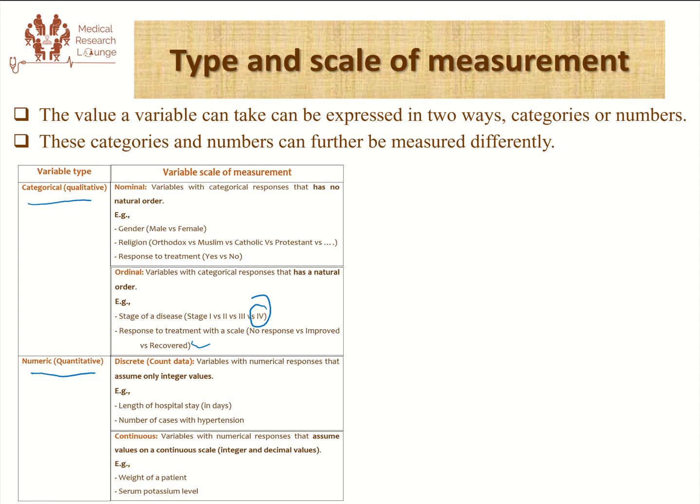The other is when numerical values assume values on a continuous scale — meaning they can have both integer and decimal values. We call them continuous variables. Good examples are weight, the height of a patient, BMI, and many other laboratory values. They assume values which are on a continuous scale.